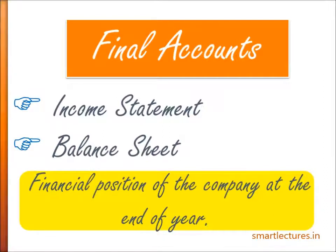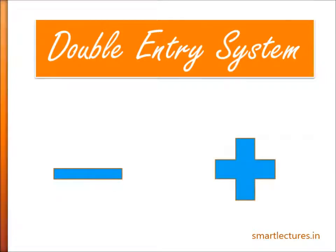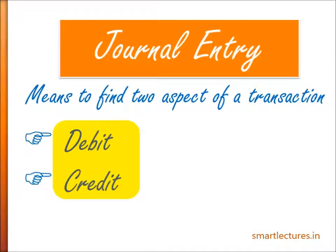I must remind you, the accountancy we are learning at this moment is based upon the double entry system. You must have noticed that in the accounting equation, every transaction was hitting at least two items, whether it was minus or plus. In the same way, now we are going to convert transactions into journal entries. A journal entry means you have to find out two aspects of the transaction: one aspect is debit and another aspect is credit. Under the double entry system, every transaction will have two aspects — one debit and one credit.